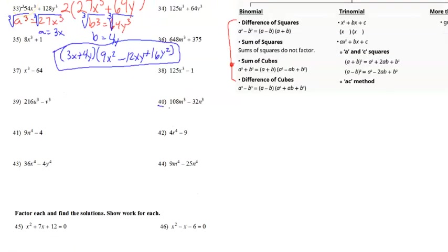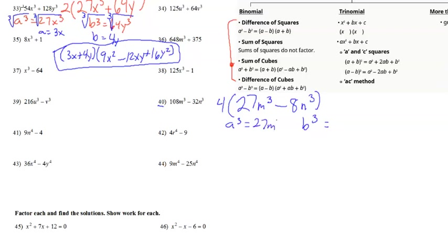Looking at number 40, we have 108m³ − 32n³. It looks like we could factor out a 4. So we have 4 on the outside, and dividing gives us 4(27m³ − 8n³). We identify a³ = 27m³ and b³ = 8n³. Taking the cube root of each side, we get a = 3m and b = 2n.